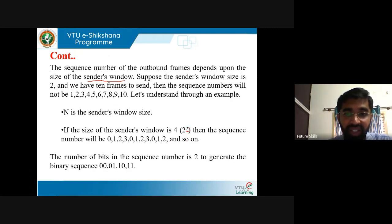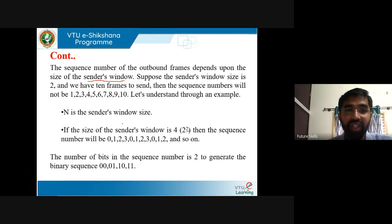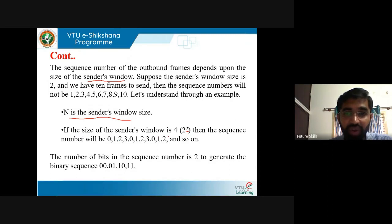These 2 bits represent the number of binary bits in the sequence number to generate the binary sequence 00, 01, 10, 11 — that is 0, 1, 2, 3. So this is how the concept of Go-Back-N protocol works: n is the sender's window size, and if the size is 4, the sequence numbers will be 0, 1, 2, 3, 0, 1, 2, 3, and so on. The number of bits in the sequence number is 2.